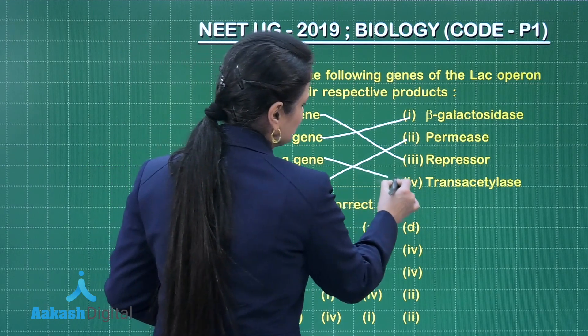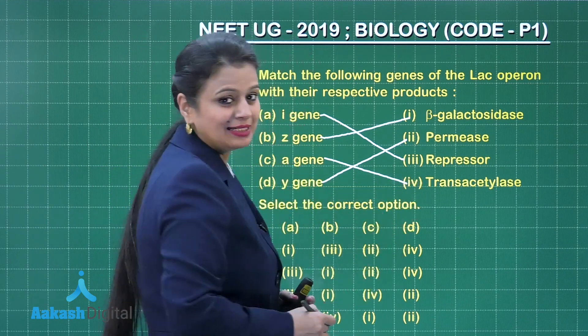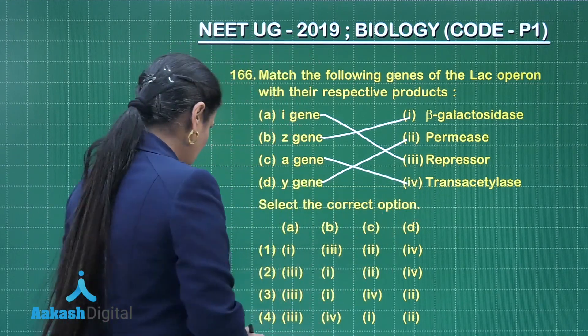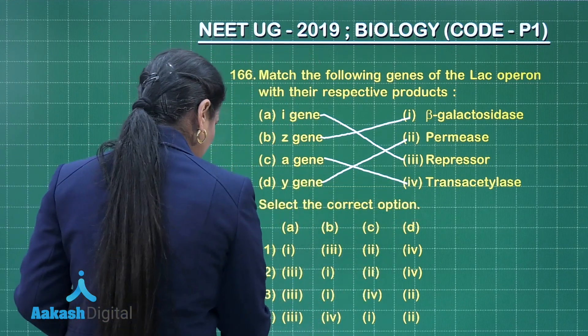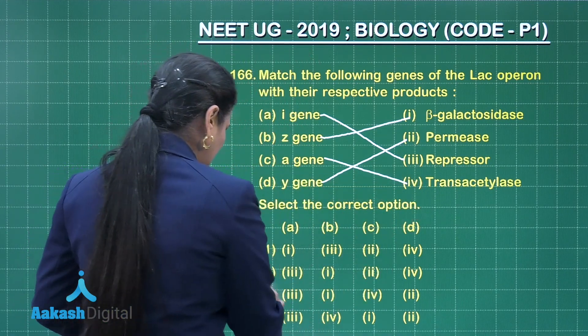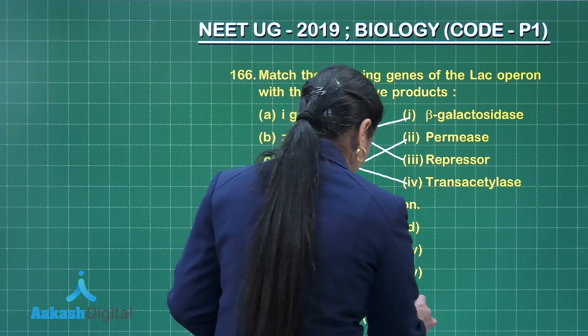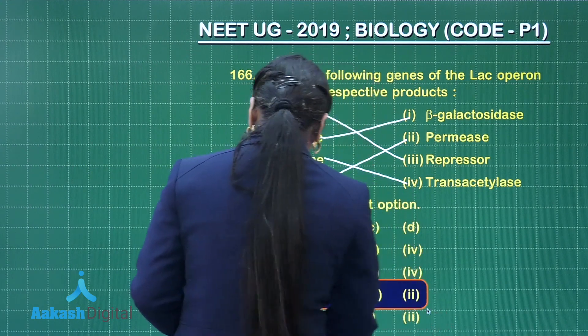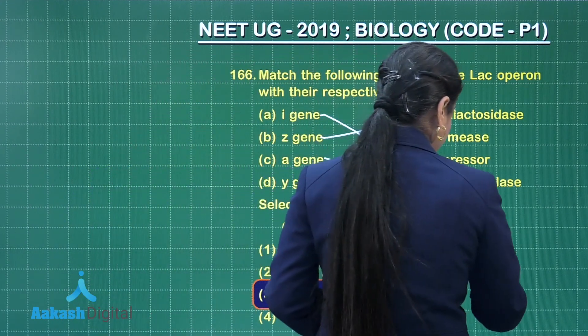The A gene forms the transacetylase enzyme. So the option which matches this is the third one, which is the right answer.